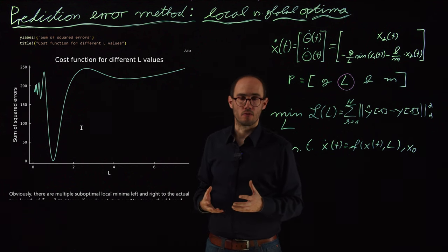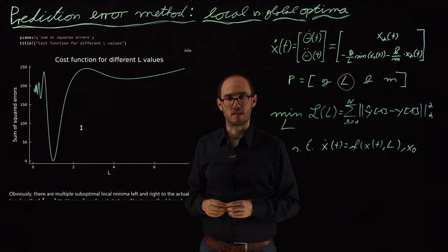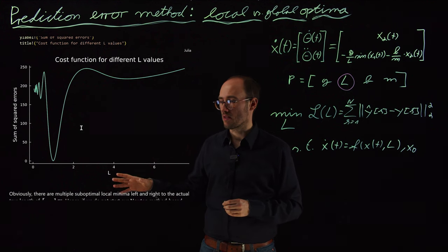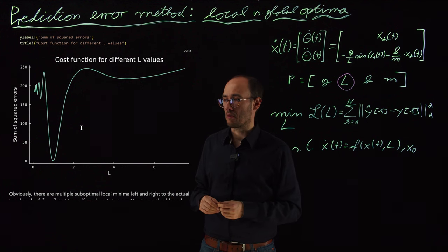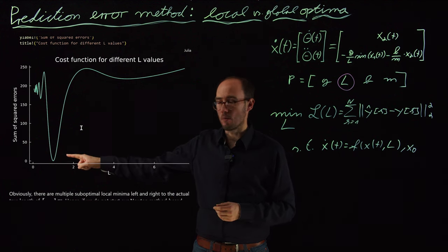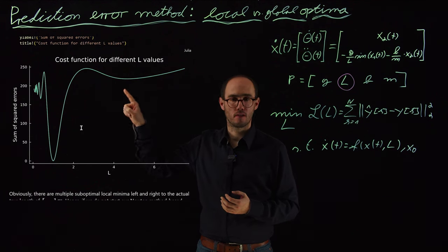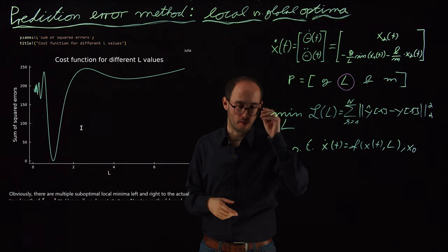And that's an issue, because if we utilize gradient descent-based solvers like the standard gradient descent or the Newton algorithm, depending on our initialization values on the length, we might not end up in the global optimum finding the true length value, but we might end up in one of the local minima, which is basically representing not the true parameter value.